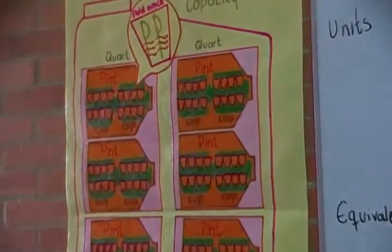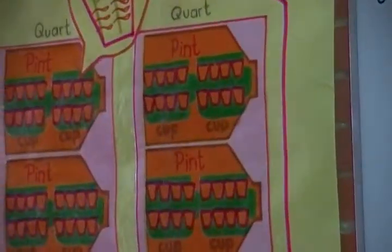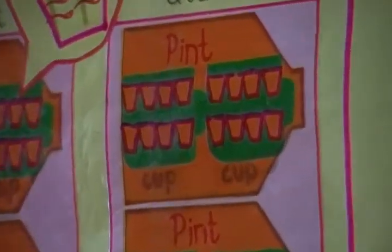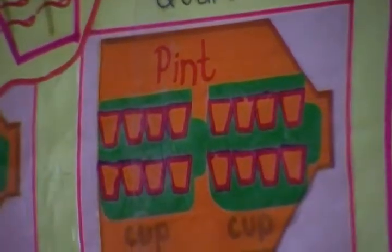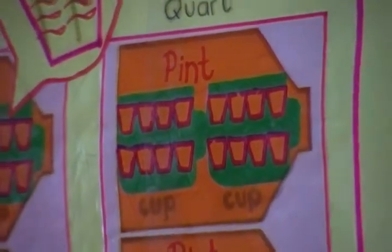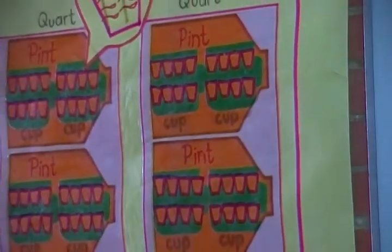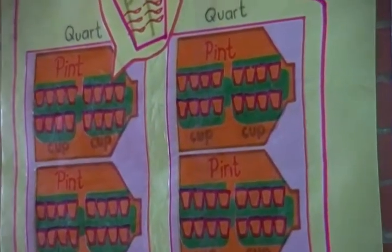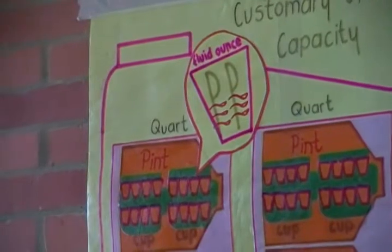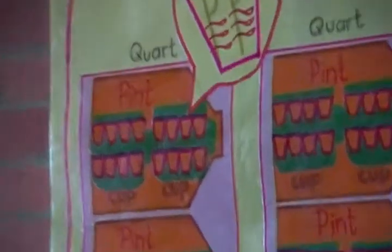At the same time, if we take only one quart, a quart has two pints, so these orange that you see. Each pint has two cups. Each cup has eight fluid ounces, so here you can see a zoom of the fluid ounces.